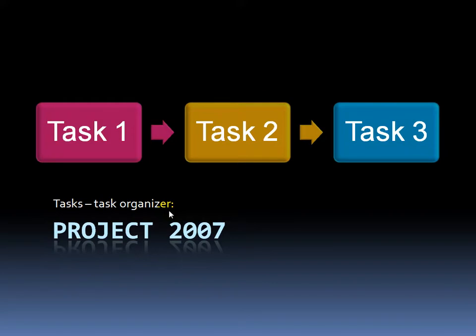A very simple and basic example would be to say I'm writing a book. My first task would be to research the book, then next write the book, and then finally print the book. Now, these tasks here are linked up in a relationship.